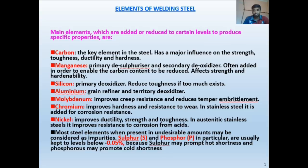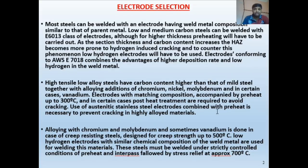Now, electrode selection: the basic idea is that most steel can be welded with an electrode having a weld metal composition similar to the parent metal. You must check the base metal composition and the weld metal composition — they should be similar. Low and medium carbon steel can be welded with the E6013 class of electrode, as its chemical composition matches that of low and medium carbon steel.